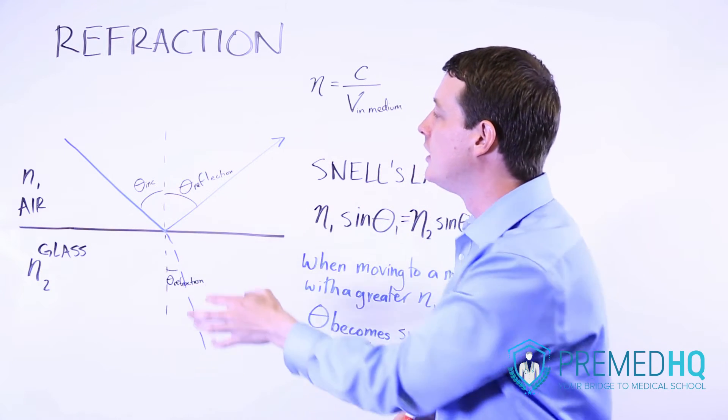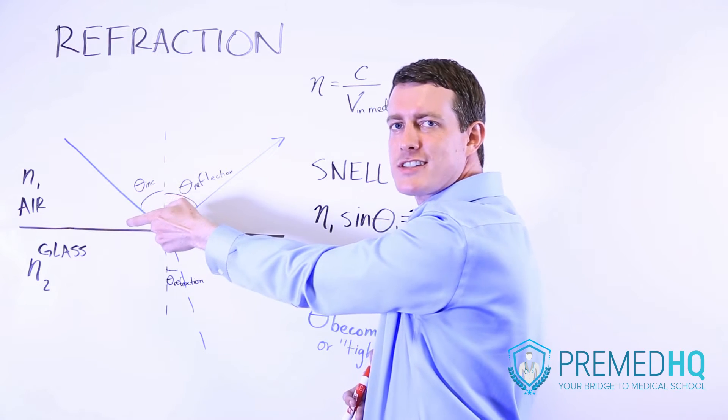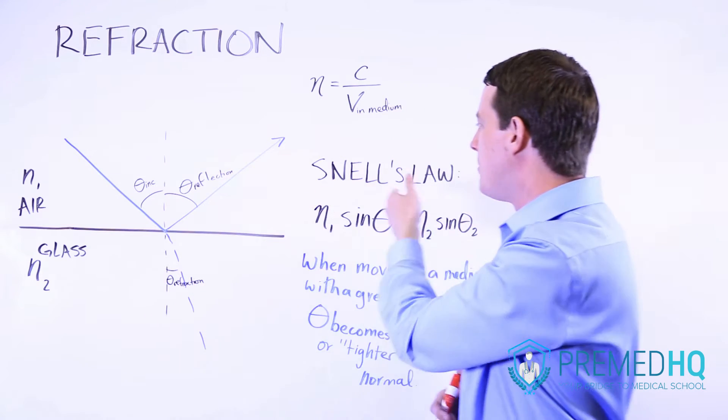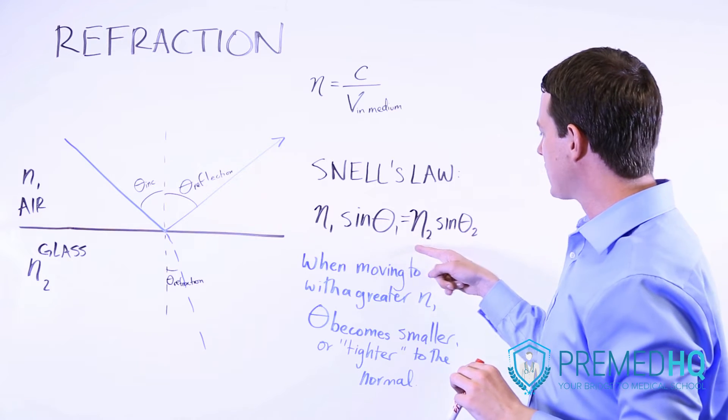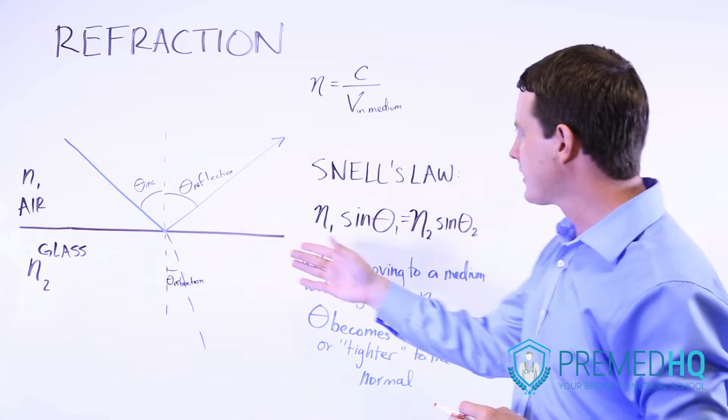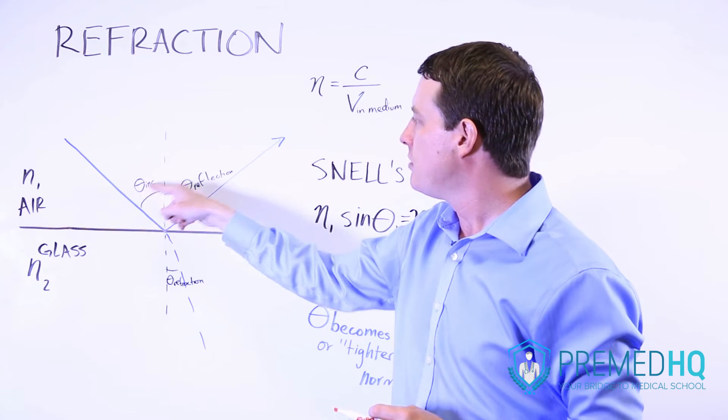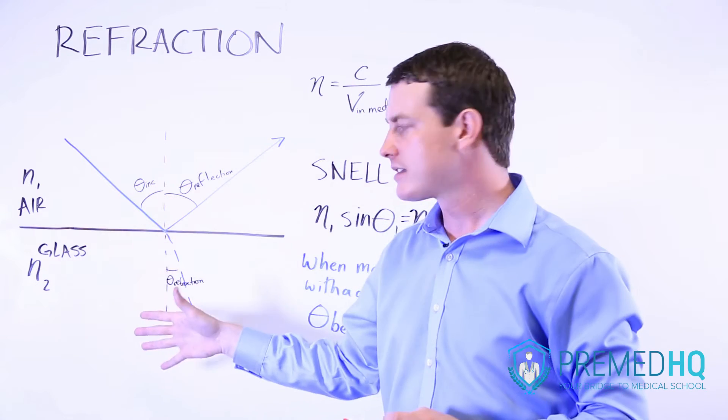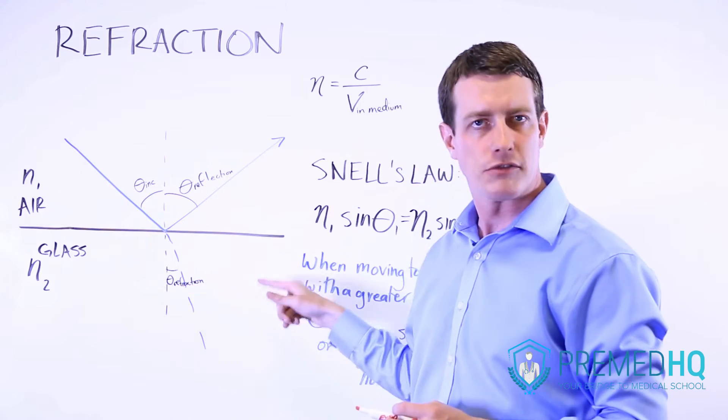You should also know that the angle of reflection will always be the same as the angle of incidence. Whereas the angle of refraction is defined by Snell's law, which says N1 times sine theta 1 equals N2 times sine theta 2. So in this case, N1 would be the air, the sine theta 1 would be the angle of incidence, and N2 would be the glass, and the theta here would be based on the angle of refraction. So you'd use that as theta 2 when you're doing Snell's law.